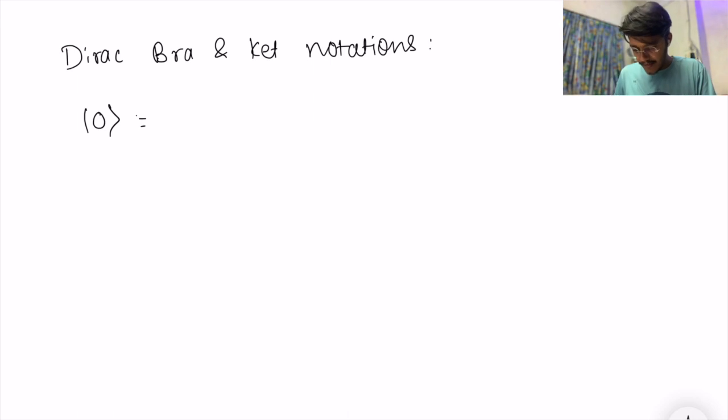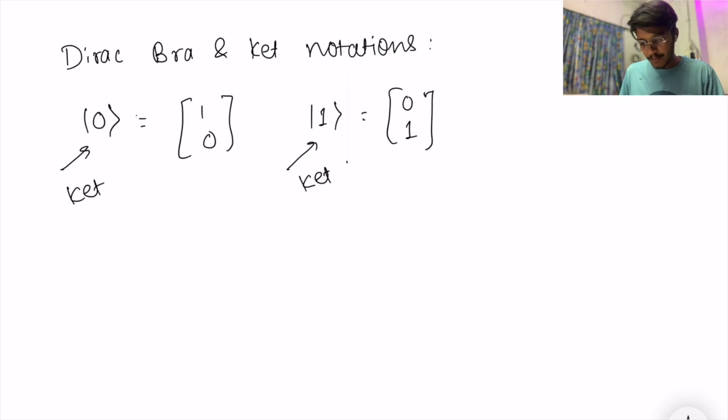So you have seen this fancy thing. These are called as ket. This is what we have seen in the last video. So what is ket? Ket is simply a column representation of a vector.